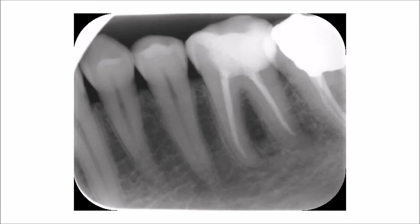In this periapical radiograph, which shows the premolars and a molar tooth, we want to understand the correct way of measuring the distance between the alveolar crest and the cemento-enamel junction. Before we start measurements, we need to identify the points where we will take our measurements.